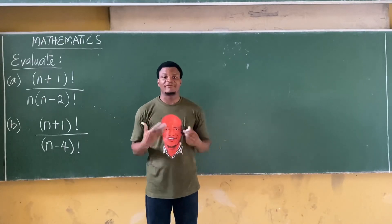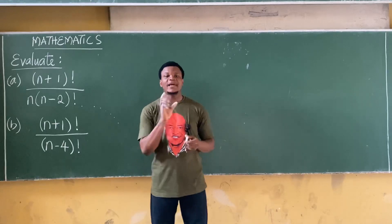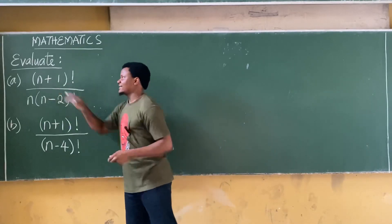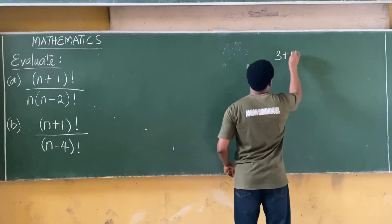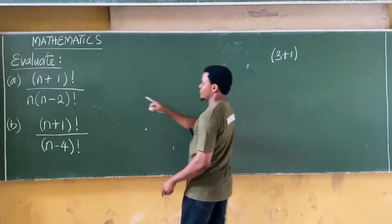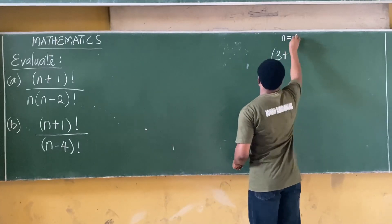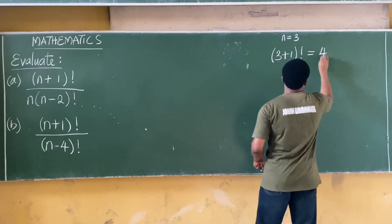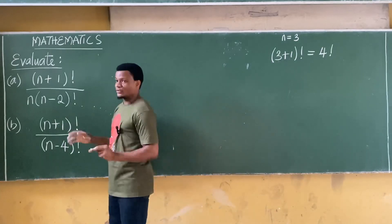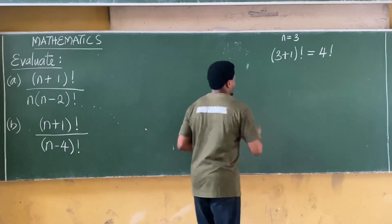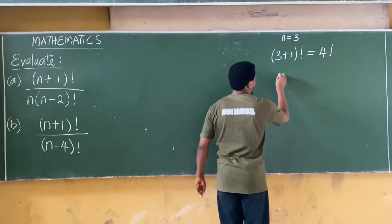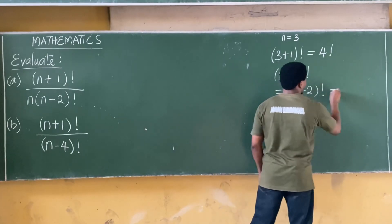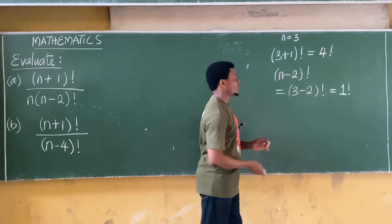To tackle this kind of question, simply assume n to be any number. Let's take n as 3 for this case. If n is 3, then n+1 factorial becomes 3+1 factorial, which equals 4 factorial. Still assuming n equals 3, n-2 factorial becomes 3-2 factorial, which equals 1 factorial. So we can now see from this comparison which is greater.